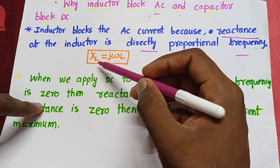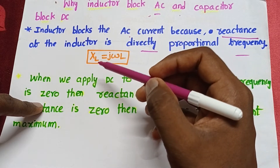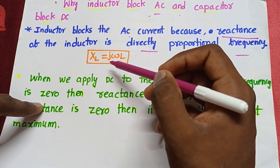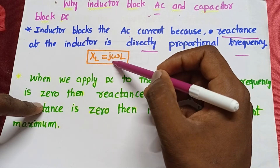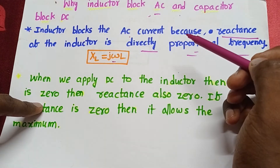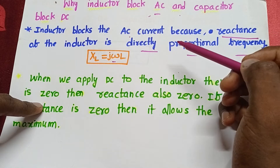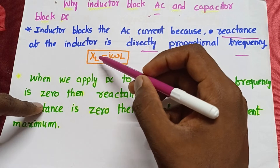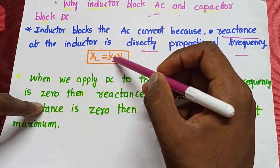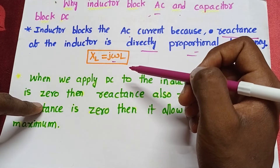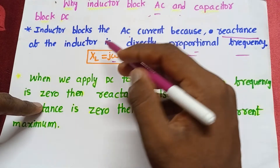XL is the inductive reactance, equal to jωL. Here, omega is nothing but the frequency of the current. If the frequency of the current increases, then the reactance also increases.